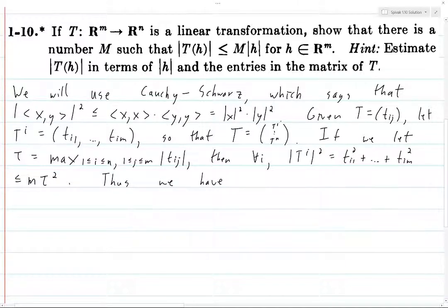Thus we have the following, let's compute Tx. So this is, again we can write this as T^1 through T^n times the vector x. And so the way that matrix multiplication is defined is that the first row is going to be the inner product of T^1 with x, because we take the first row of the matrix and multiply it by the column vector.